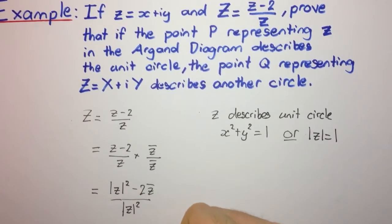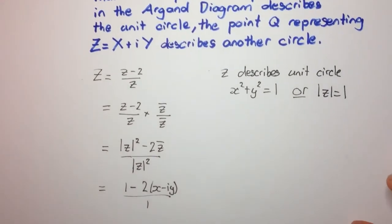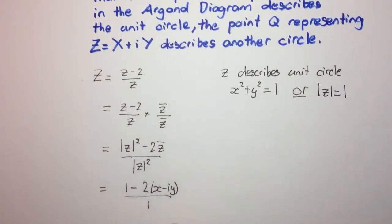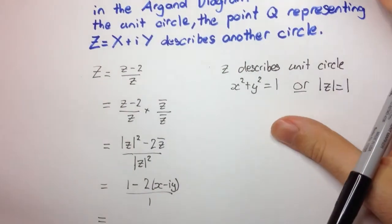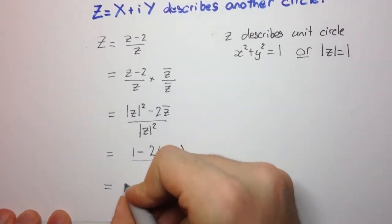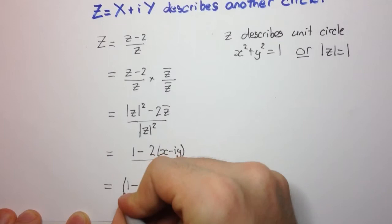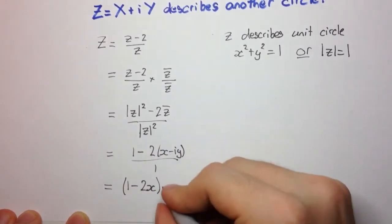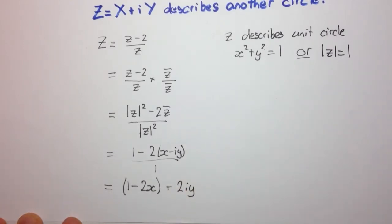So we have x minus i y. And then all this divided by 1. Let's see, what else do we have? We can simplify here and collect the real parts. So we have 1 minus 2x as the real part. We're going to have minus minus 2i y. So it's plus 2i y, all over 1, which is what we have.